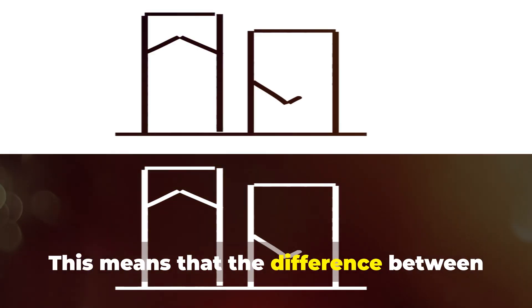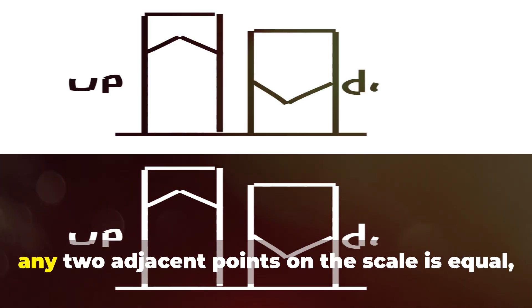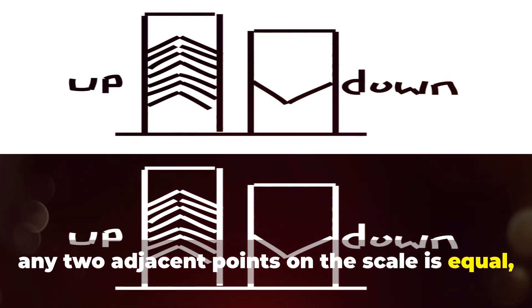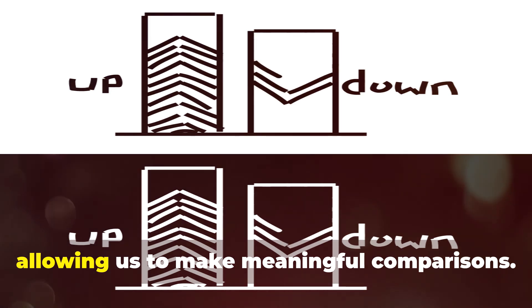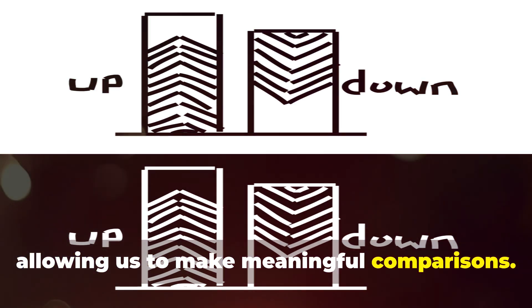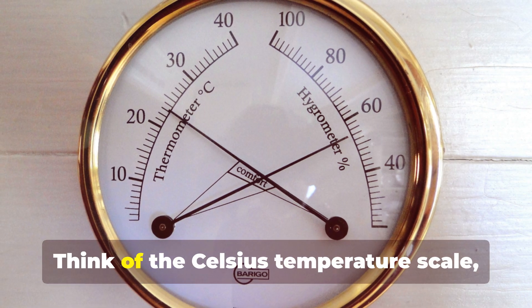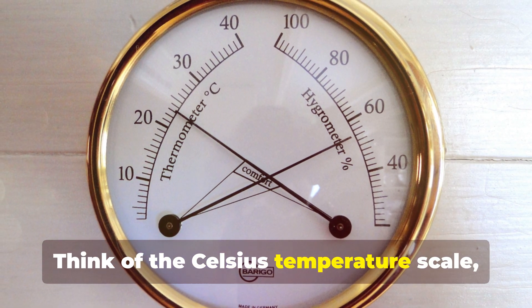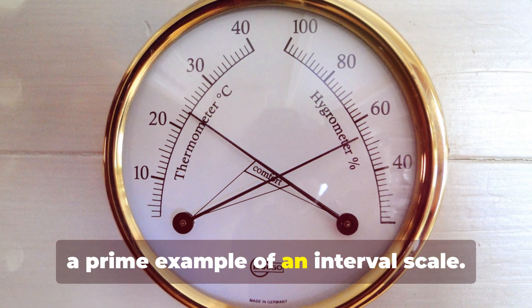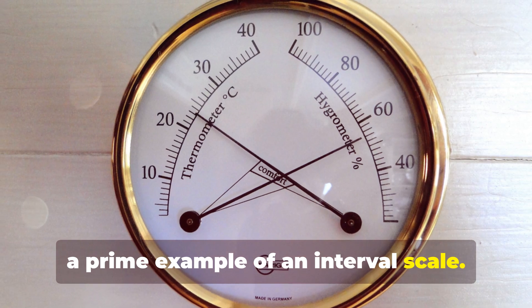This means that the difference between any two adjacent points on the scale is equal, allowing us to make meaningful comparisons. Think of the Celsius temperature scale — a prime example of an interval scale.